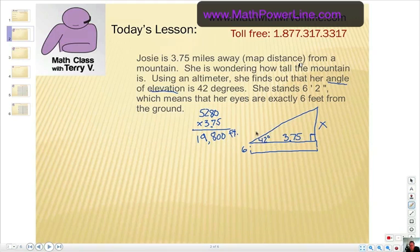When we look at our right triangle, we notice that our angle of reference is right here, 42 degrees. We've got to remember our trig functions. We have the opposite leg from our reference angle, which we're calling x. And the 3.75, which is really 19,800 feet, is the adjacent leg. Which trig ratio represents the opposite leg and the adjacent leg?